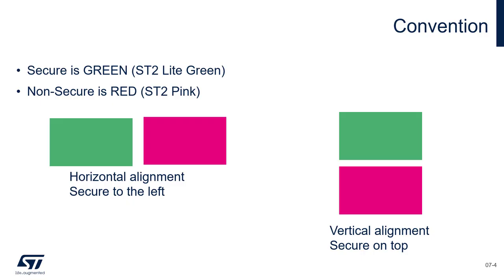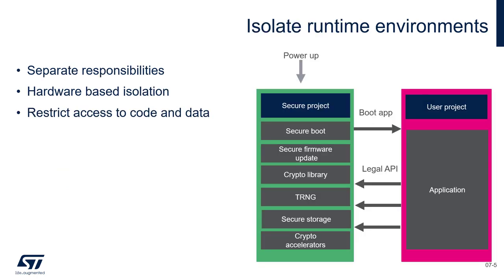There is a color convention throughout this video. The secure project is color coded as green, the non-secure as pink. The purpose of creating an isolation barrier between the secure and user project is to protect the key secrets and assets. If a hacker gains access to the user application, they will still be able to cause mischief in those regions, but they will not be able to access any resource that is behind the isolation barrier. They cannot compromise the key, they cannot bypass the authentication checks, for example.